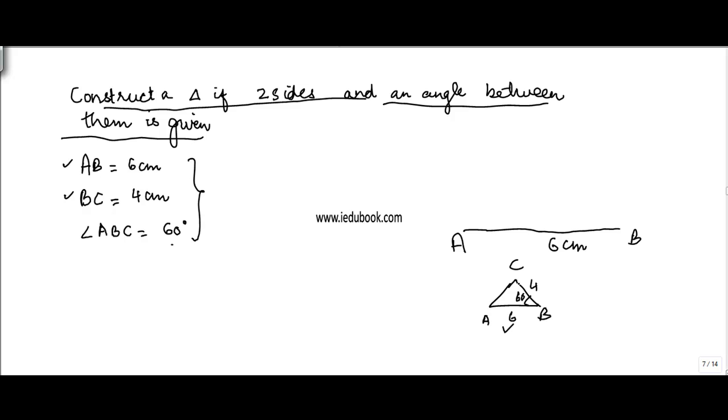So I have done this. Now BC I know is 4 cm, but where do I construct this BC? Now BC can be something like this, this, this, this. It can be anywhere. But I don't know where to construct BC, this particular line. But what I know is that the angle between them at B is equal to 60 degrees.